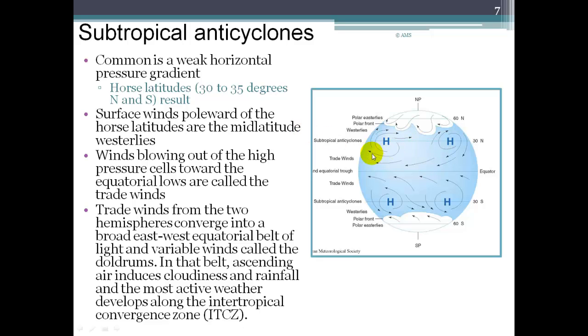Those horse latitudes are up here around 30 degrees where these pressure gradients are fairly weak and the winds are inconsistent and can be very weak. The winds that are blowing out of these high pressure cells towards the equator, these are the trade winds, these are the strong winds. But the ones that are closer to 30 degrees are what we call the horse latitudes.